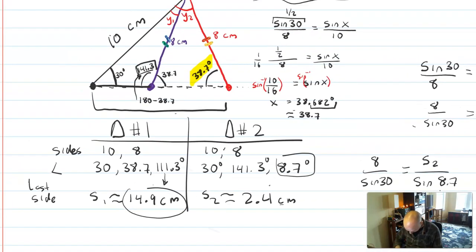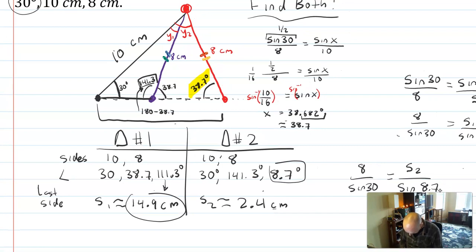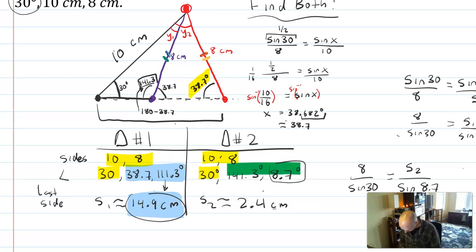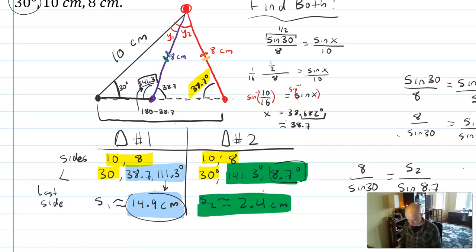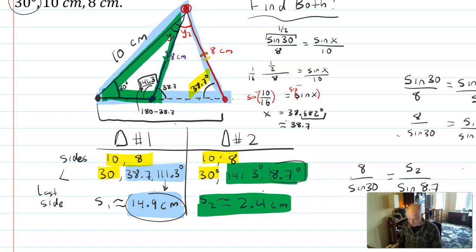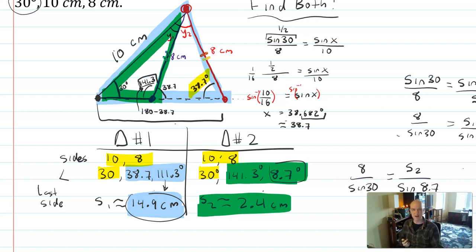Going back to look at both: we were given the same information — 10, 8, and 30° — but everything else differed. Triangle 1 had angles 38.7° and 111.3° with a missing side of about 14.9 cm. Triangle 2 had angles 141.3° and about 8.7° with a much shorter missing side of about 2.4 cm. We have a large outer triangle and a smaller inner triangle, and with the given information we have no way of knowing which is which, so we solve for both.